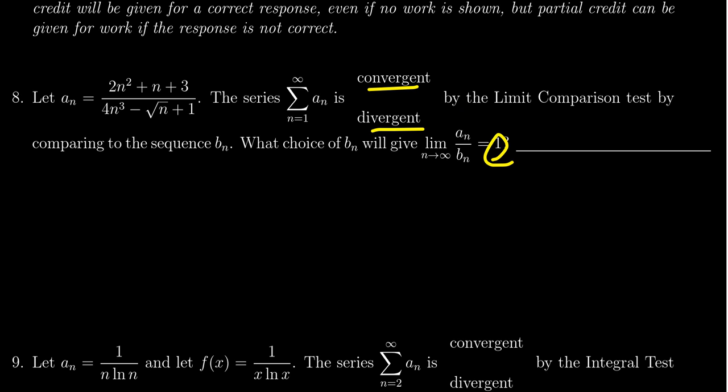In order to get exactly 1, we basically just want to look at the leading terms there. So looking at a sub n right here, who are the leading terms? On the top, the dominant term, the fastest growing term is the 2n squared. In the denominator, the dominant term is going to be the 4n cubed.